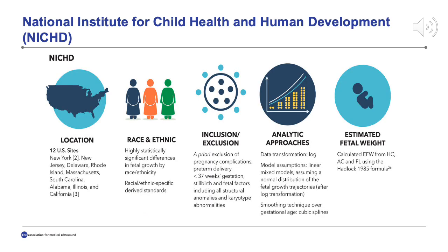Another method used to estimate fetal weight was developed by a project completed at the National Institute for Child Health and Human Development, or the NICHD. Data was gathered from 12 locations around the United States. An estimated fetal weight was calculated according to a modified version of the Hadlock formula. This formula incorporated only head circumference, abdominal circumference, and femur length — biparietal diameter was not included. A fetal growth chart according to race and ethnicity was subsequently developed.